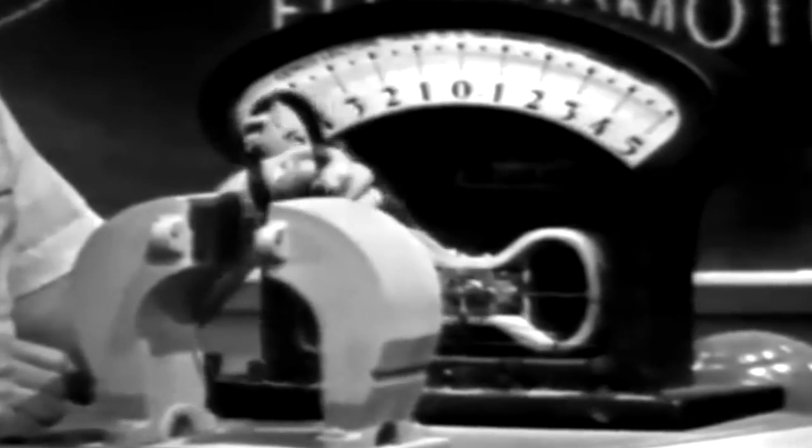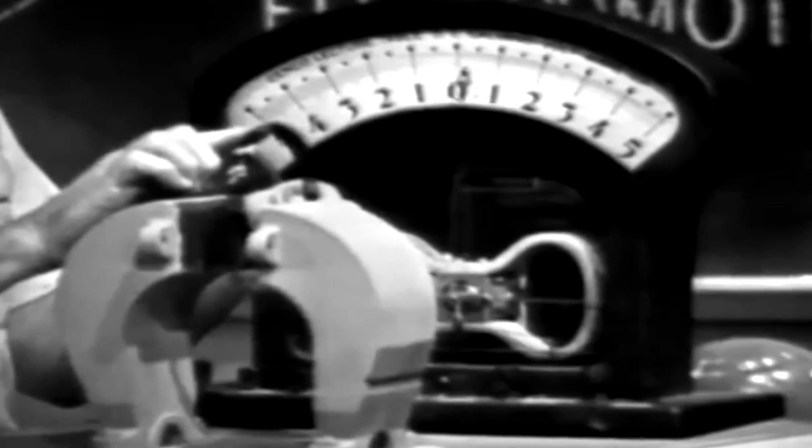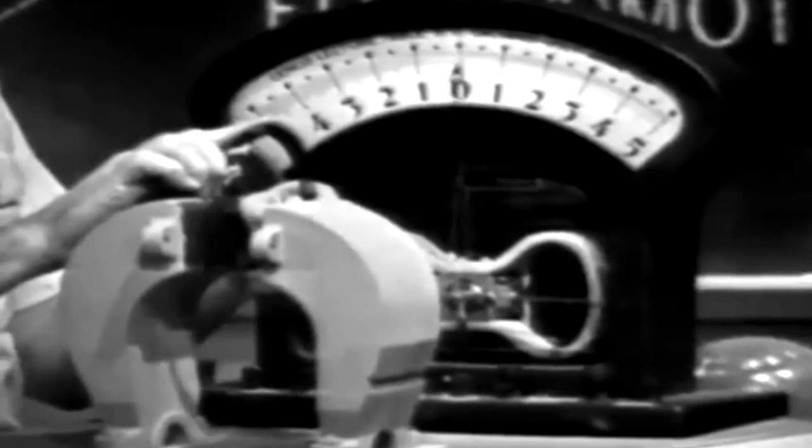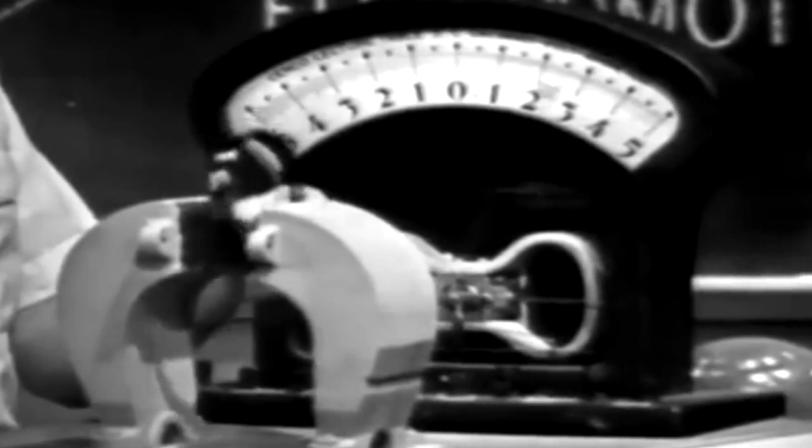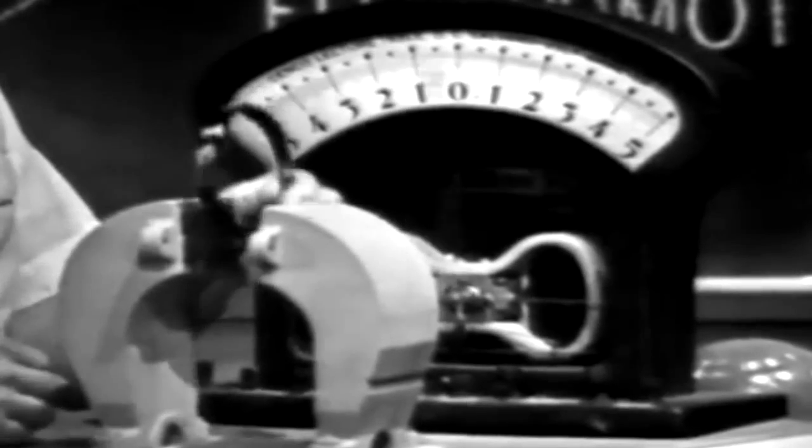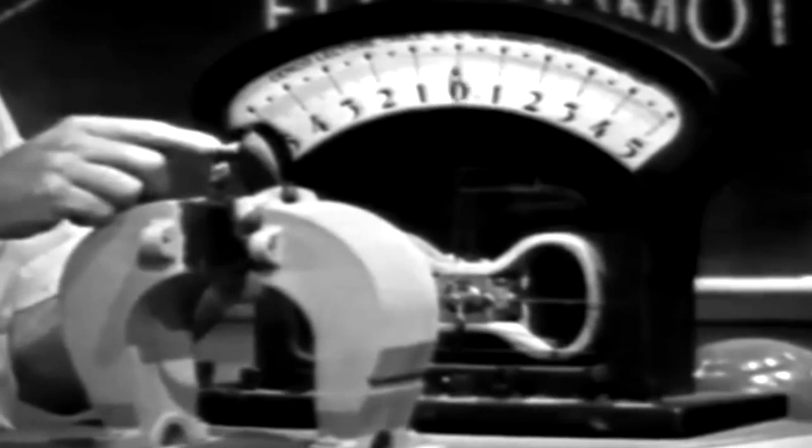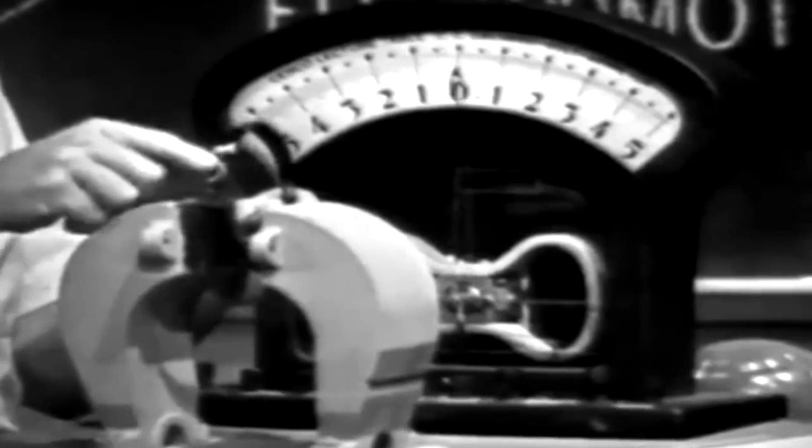Now, it doesn't make any difference how the motion is attained. The magnetic field or the conductor could be moved. I've elected to move the conductor. The important thing is there must be movement between the two or relative motion. Now, notice that the meter needle swings back and forth as the conductor is moved. This is because the field will force electrons to one end of the conductor and then to the other end.